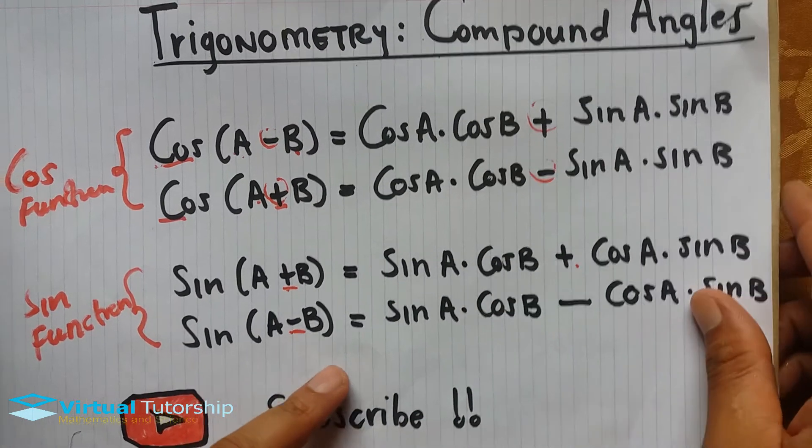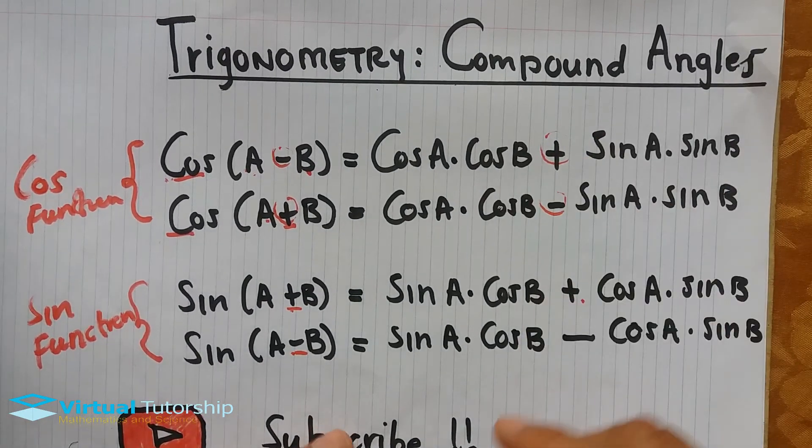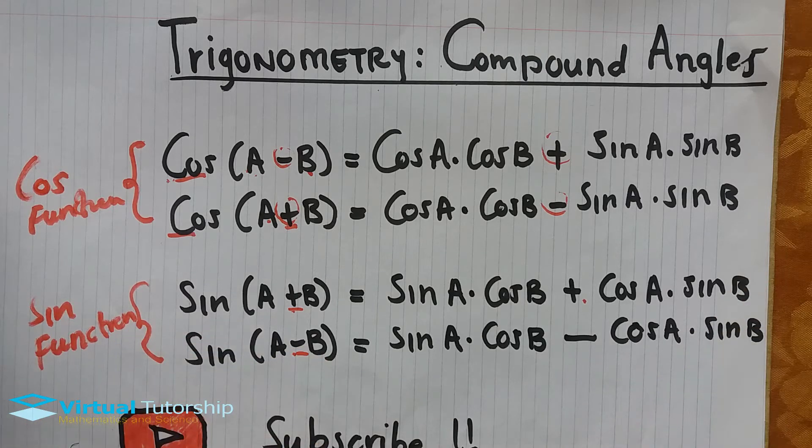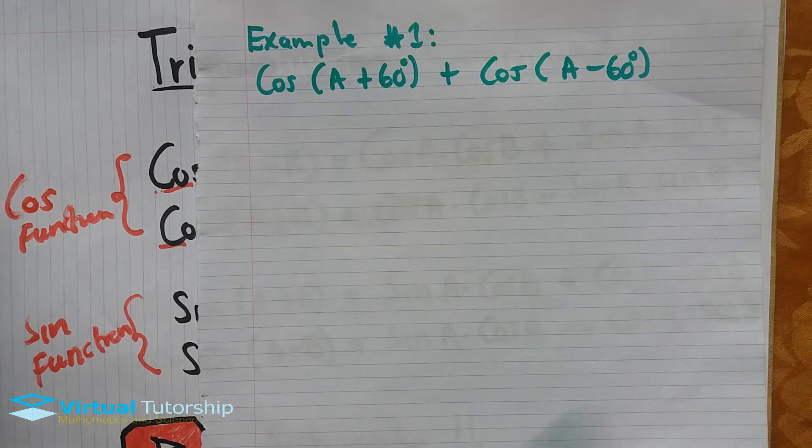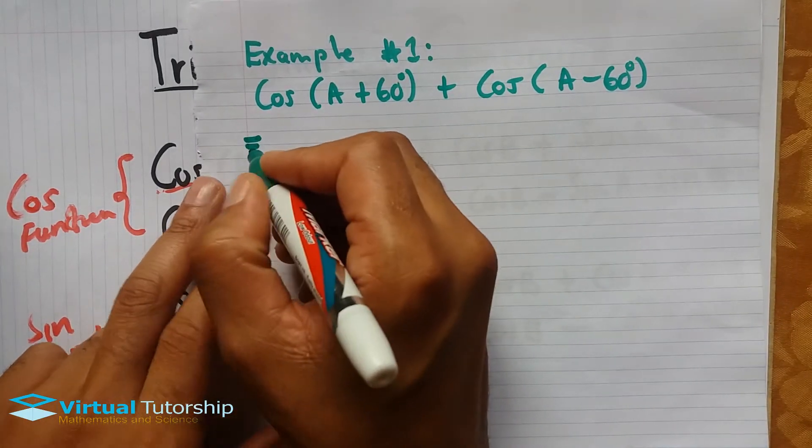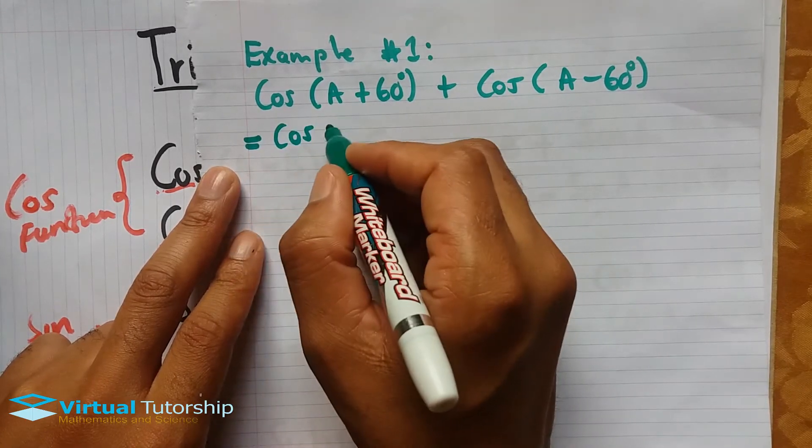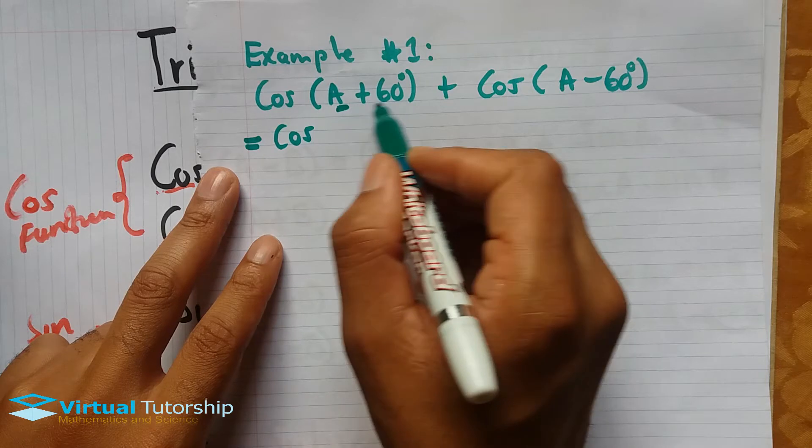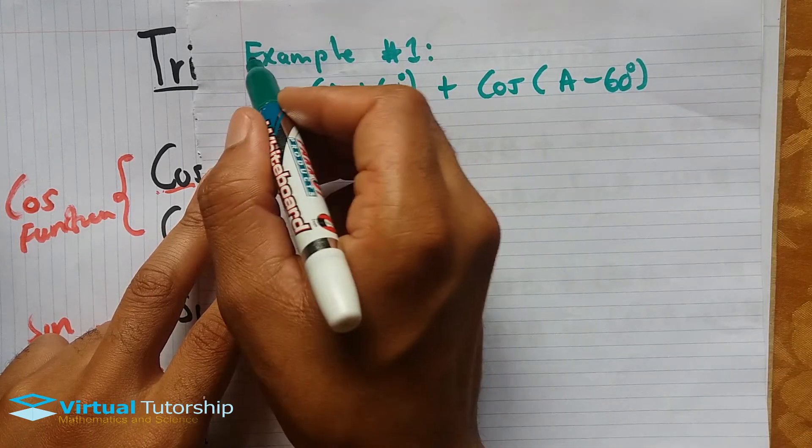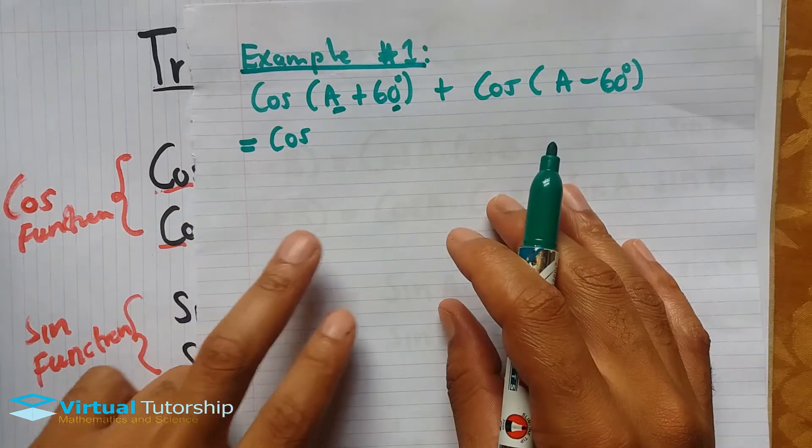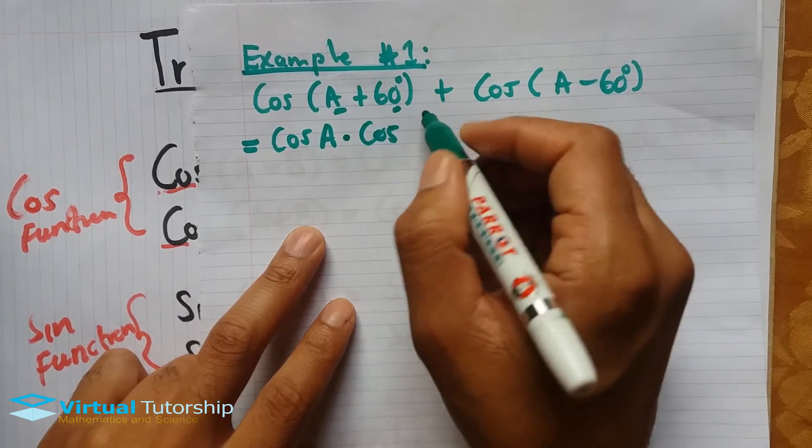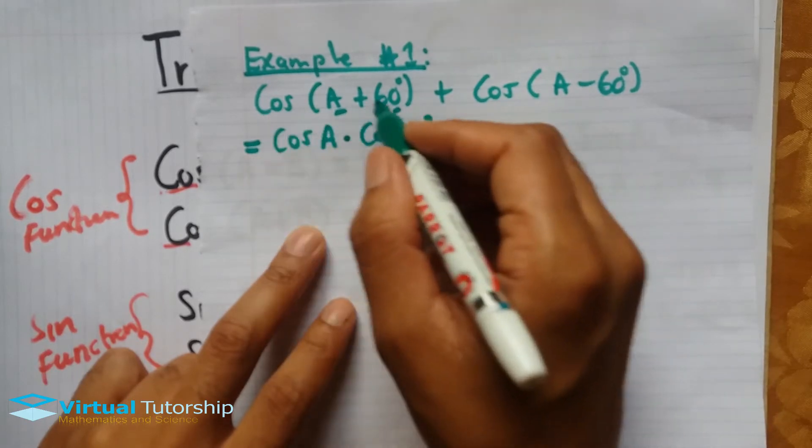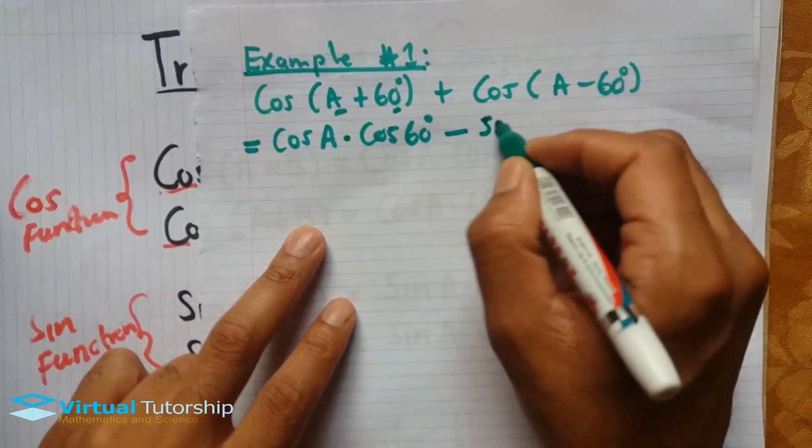Let's start with an example. Say you are given cos(A+60) + cos(A-60). To simplify, you have two angles that you need to compound, so apply the compound angle formula. That's cos(A)·cos(60°) - sin(A)·sin(60°).